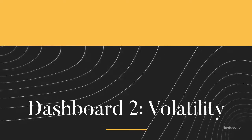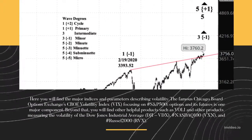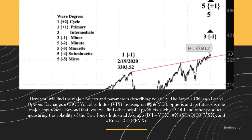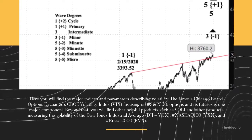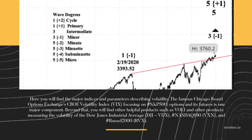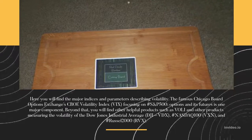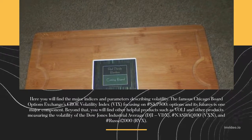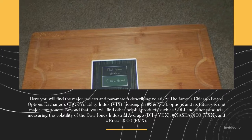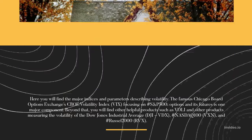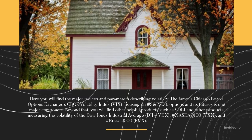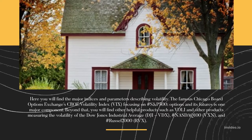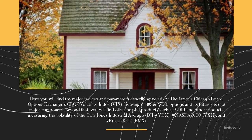Dashboard 2: Volatility. Here you will find the major indices and parameters describing volatility. The famous Chicago Board Options Exchange's CBOE Volatility Index, VIX, focusing on S&P 500 options and its futures is one major component. Beyond that, you will find other helpful products such as VOLI and other products measuring the volatility of the Dow Jones Industrial Average (DJI-VDX), NASDAQ 100 (VXN), and Russell 2000 (RVX).